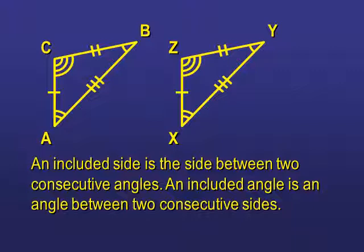So let's talk about what included means. An included side is the side between two consecutive angles, and an included angle is the angle between two consecutive sides. If I was going to talk about angle X, the side XZ and side XY are consecutive sides, and the angle X would be included.